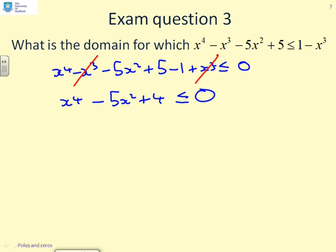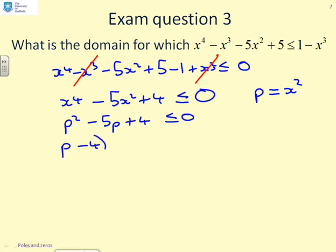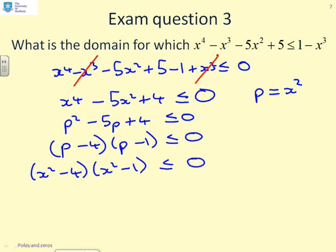You may remember from a previous video that we can simplify this using the substitution p equals x squared, because this is quadratic in x squared. So I can write p squared minus 5p plus 4 less than or equal to 0, and this factors as p minus 4 times p minus 1, less than or equal to 0. Substituting back in terms of x squared: x squared minus 4 times x squared minus 1, less than or equal to 0. These have the difference of squares shape, so I can write this as x plus 2 times x minus 2 times x plus 1 times x minus 1, less than or equal to 0.